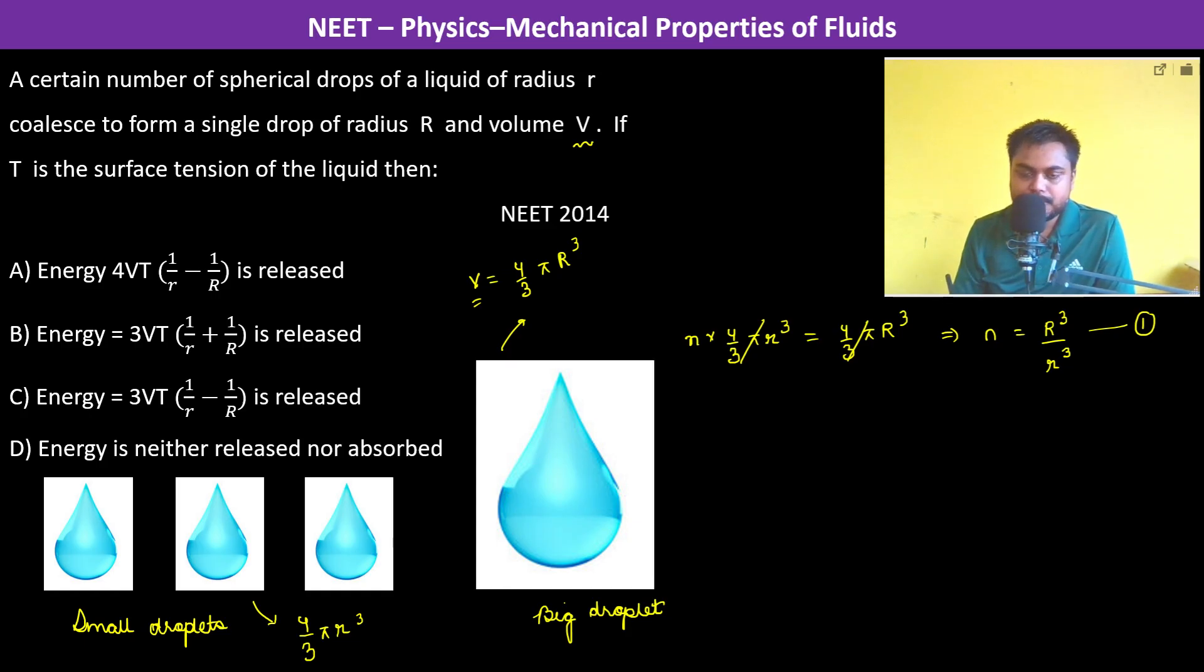So initially the energy was... what is the formula of energy surface energy? The formula is equal to surface tension multiplied by the surface area. So this is the formula for the surface energy.